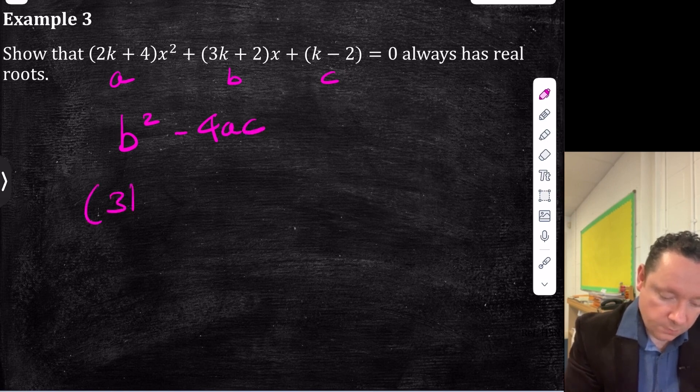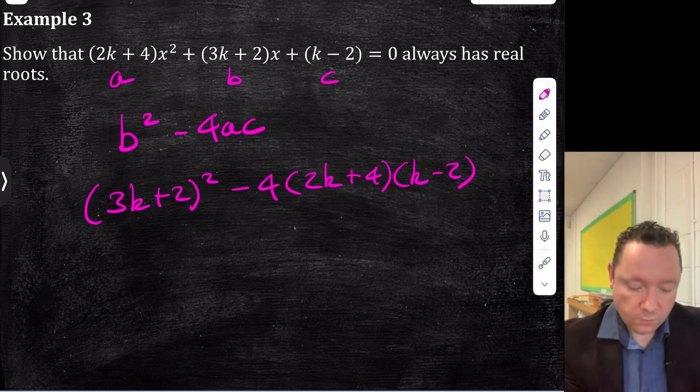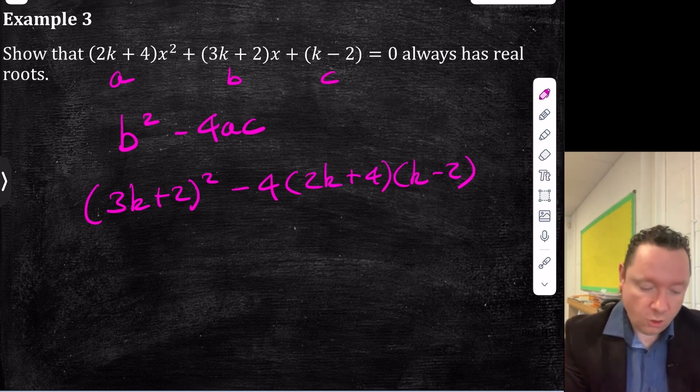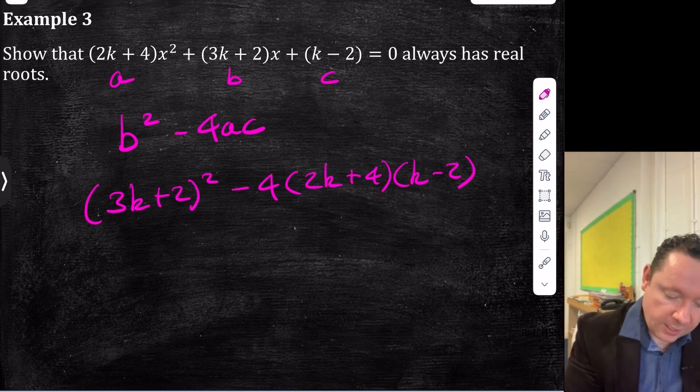Well, we've got (3k + 2) all squared minus 4 times (2k + 4) times (k - 2). So we need to collect like terms and check that this has real roots all the time. So how are we going to do that? Well, if it's got real roots all the time, it means it could be a perfect square. If it's a perfect square, it means it could be square rooted. So we're going to complete the square, essentially.